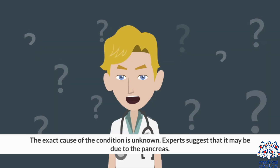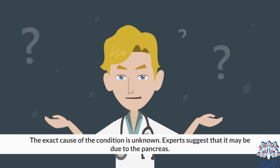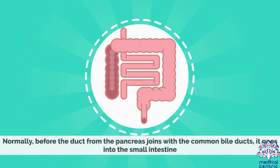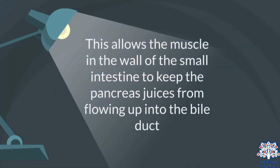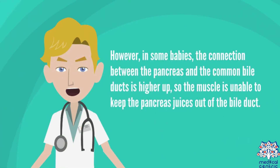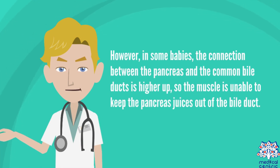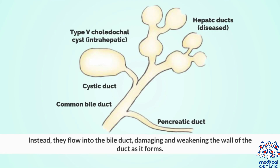Causes. The pancreatic juice flows back into the bile duct instead of flowing out, damaging and weakening the wall of the duct as it forms.